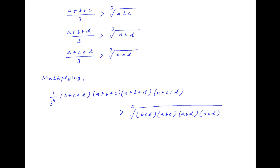Now, since s = a + b + c + d, therefore b + c + d = s − a, a + b + c = s − d, a + b + d = s − c, and finally a + c + d = s − b.